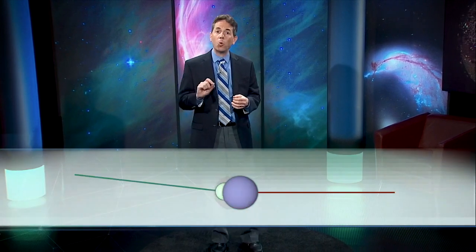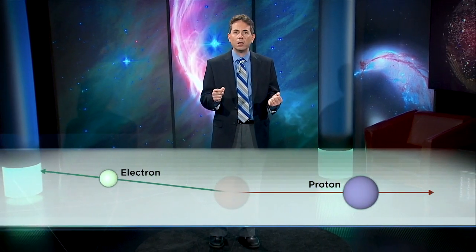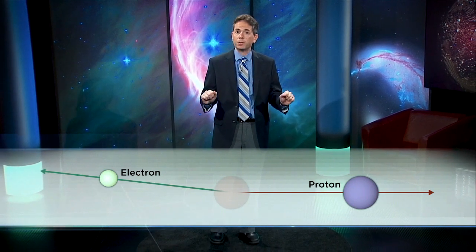For example, a neutron, sitting all by itself, will spontaneously turn into a proton within about 10 minutes. Now that can't be all that happens. The total electrical charge has to be conserved. The new proton's positive charge has to be balanced by negative charge somewhere else. So what happens is that the weak force conjures up an electron along with a proton, and they sail away in nearly opposite directions.